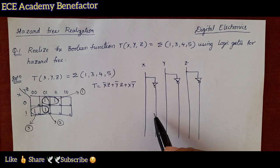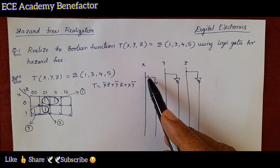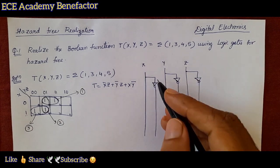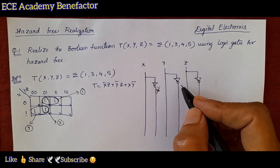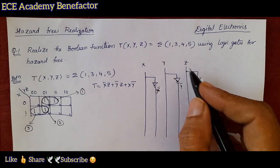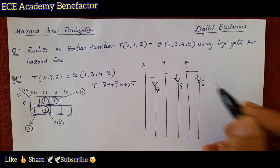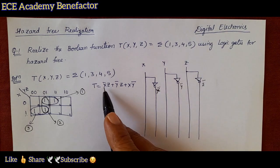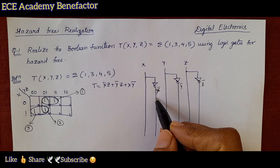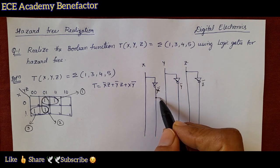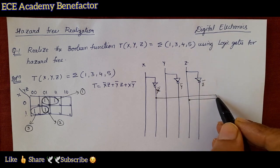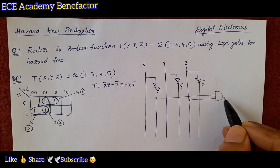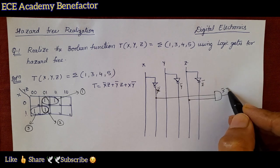Now we need to draw the logic circuit. We take a NOT gate to get x̄, and the available signals are x̄, x, y, ȳ, z, z̄. We need to get x̄z, so take x̄ and z and give them to an AND gate to get the term x̄z.